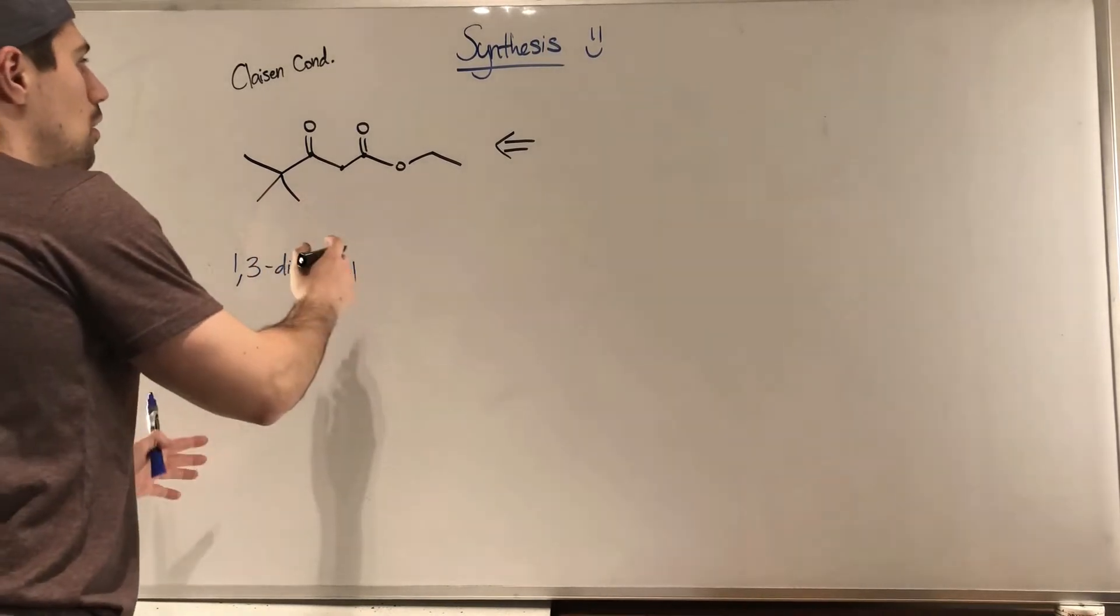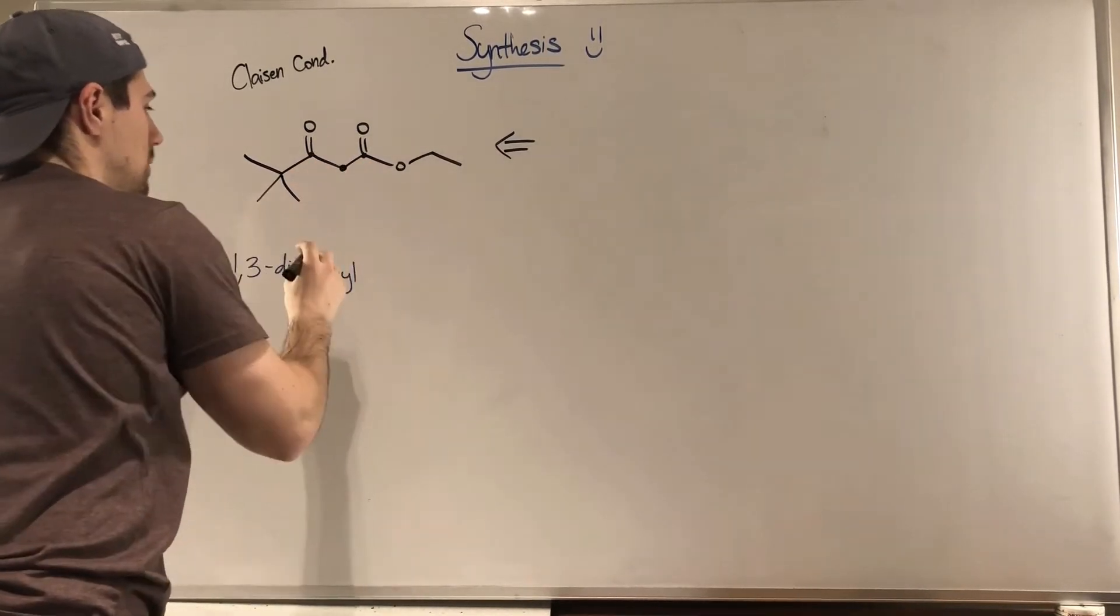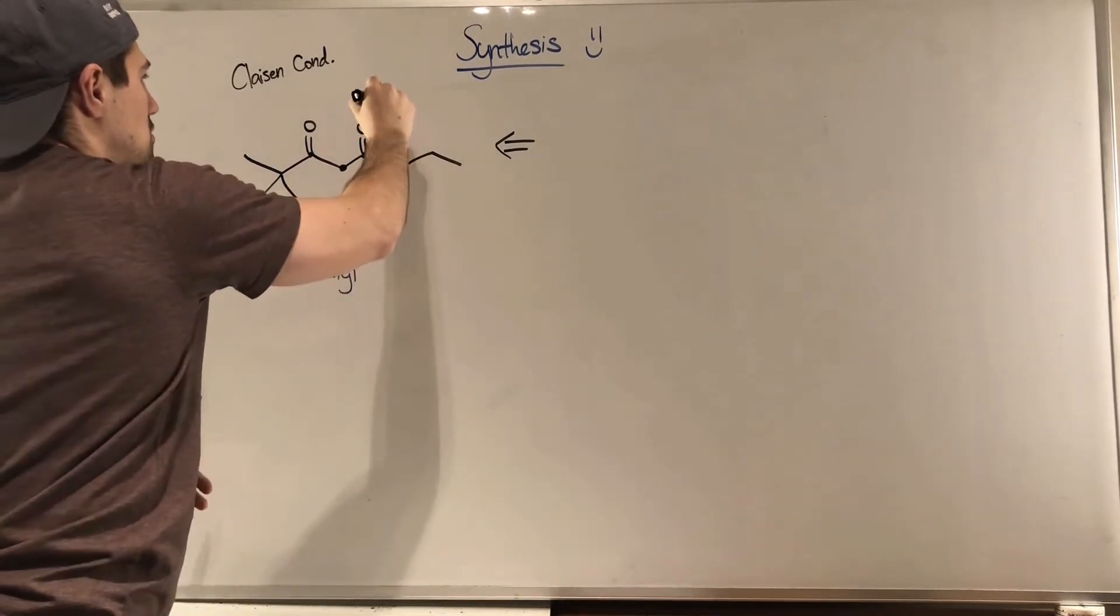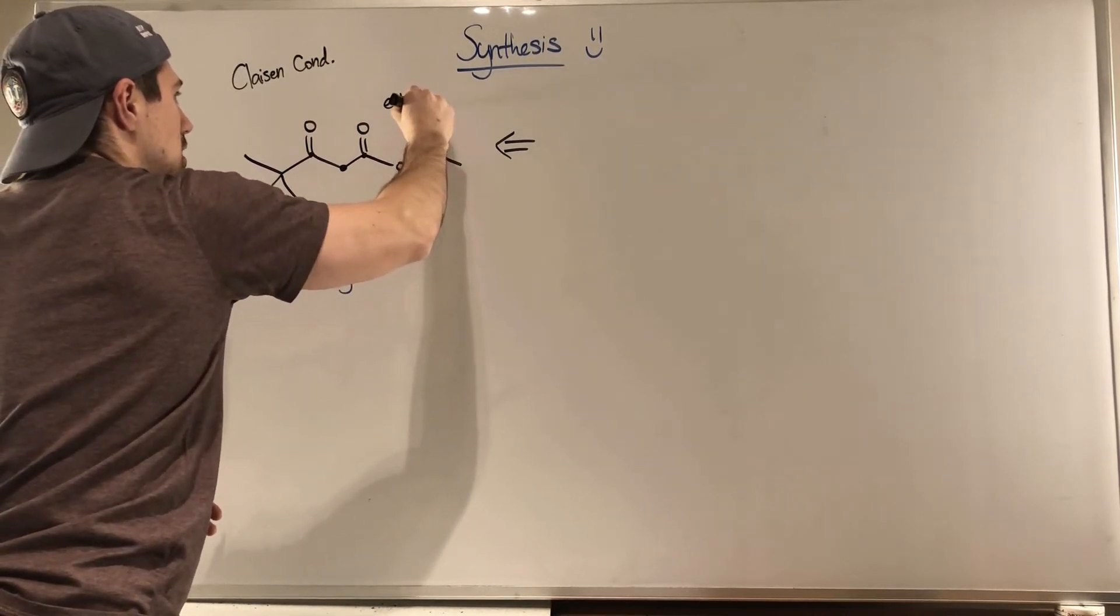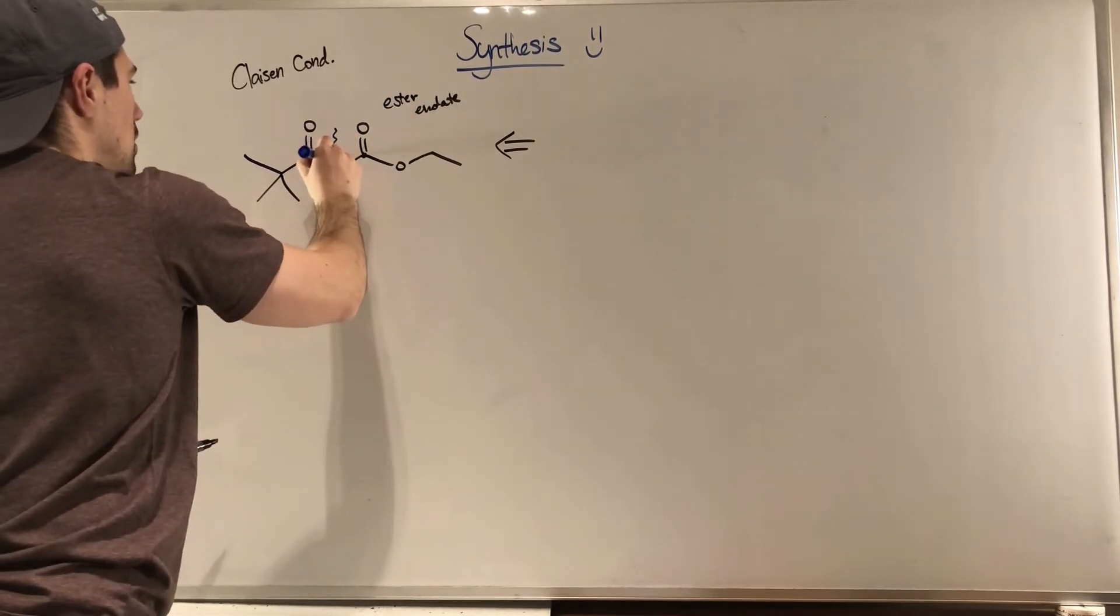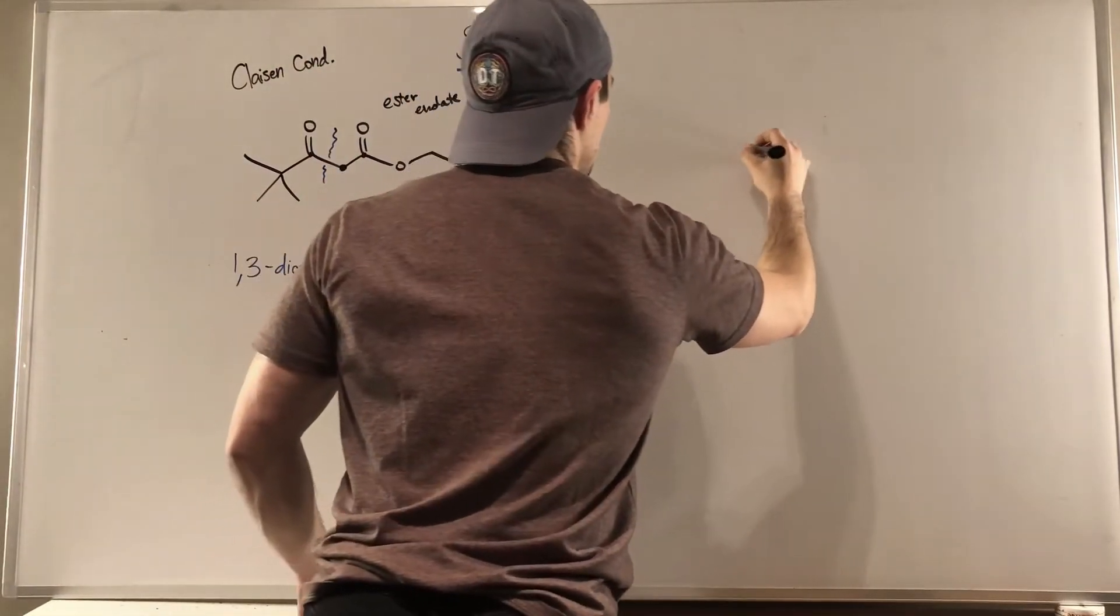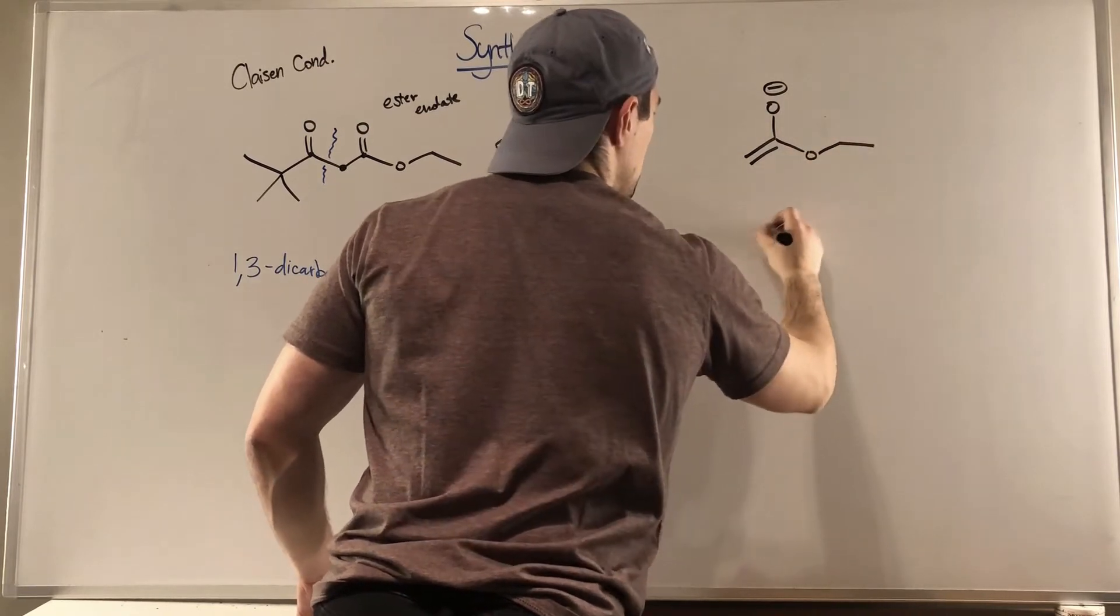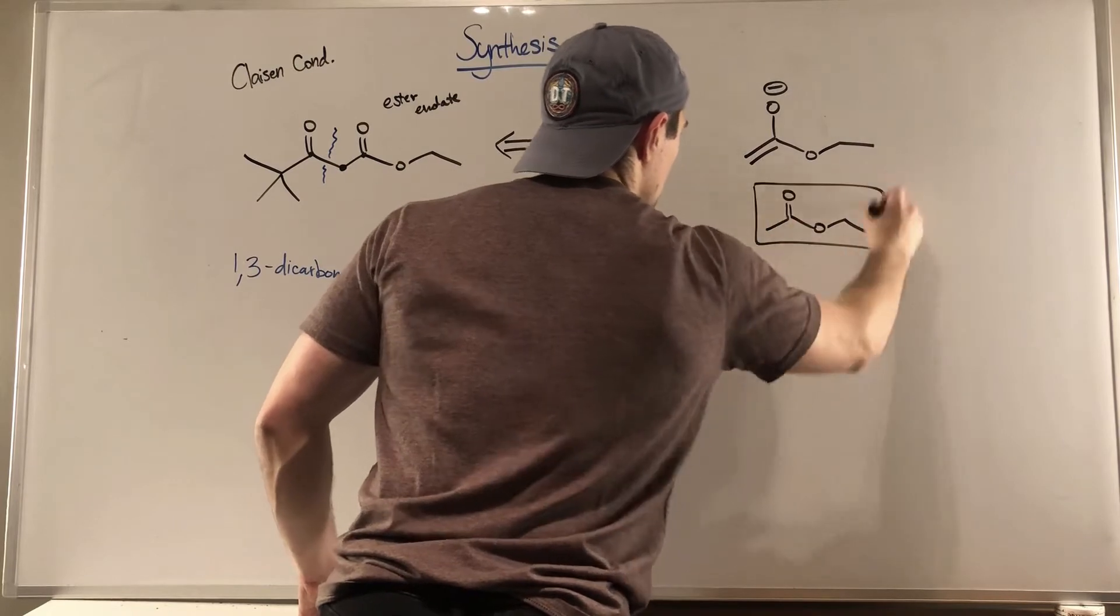So we know when we do Claisen condensations, we attack from an alpha carbon. So I think it's safe to say that if we were to look at this, we see this to be the ester enolate. So I think it's safe to say we can draw a line right there. I think it's safe to say that our ester enolate looked like this and this is the ester it came from.